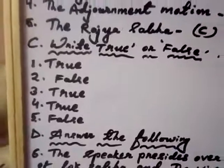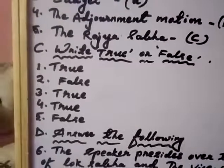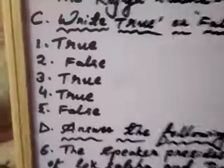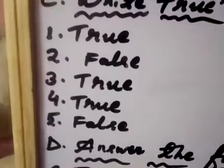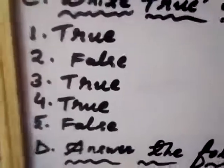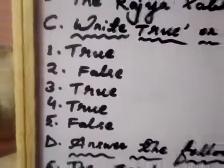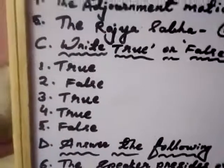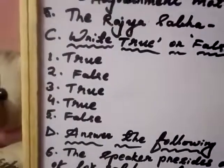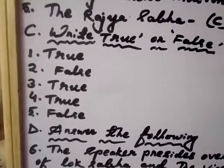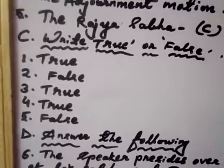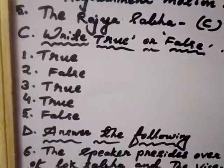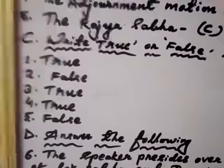True and false: The parliament has two houses — true. Number two, the speaker is the presiding officer of the Rajya Sabha — false. The vice president is the presiding officer of the Rajya Sabha. Number three, the maximum strength of the Lok Sabha is 552 — true. The members of the Rajya Sabha are indirectly elected — true. The ministers are jointly responsible for the house of the parliament — false. It is for the Lok Sabha.